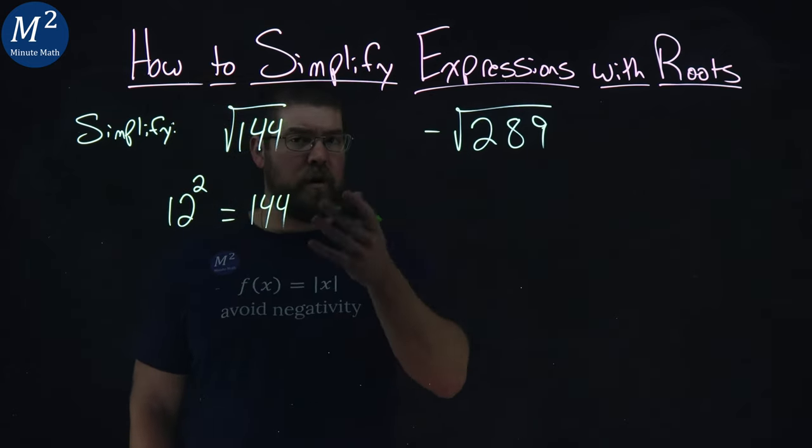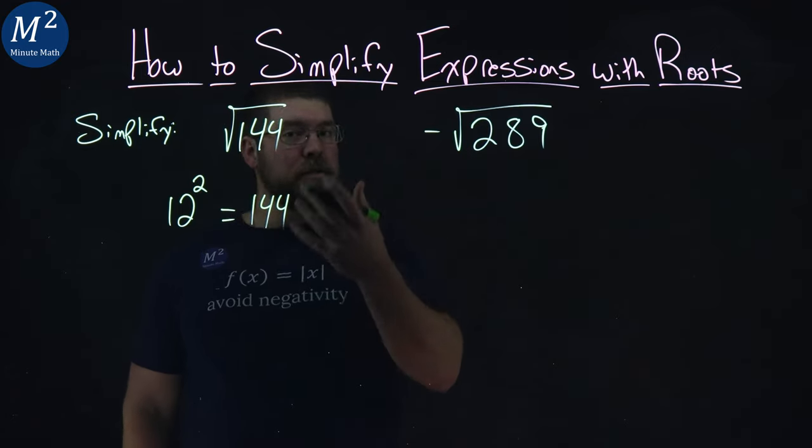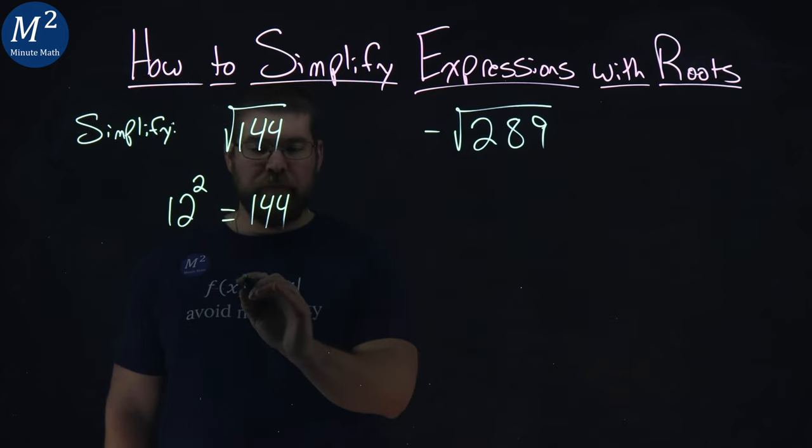So 12 squared, 12 times 12, is 144. We would say then the square root of 144 is 12.